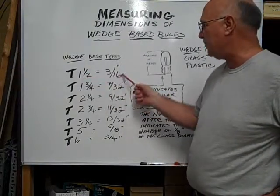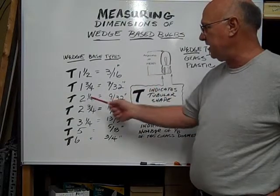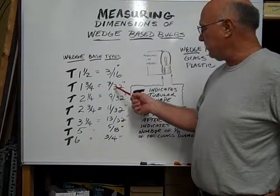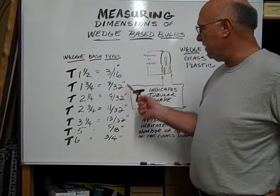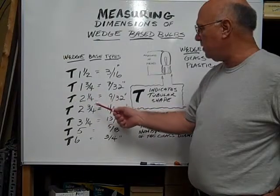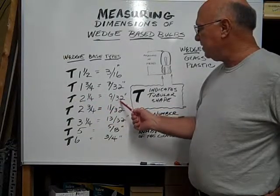This is a T one and a half which equals three-sixteenths. A T one and three-quarters equals seven thirty-seconds of an inch. A T two and a quarter is nine thirty-seconds.